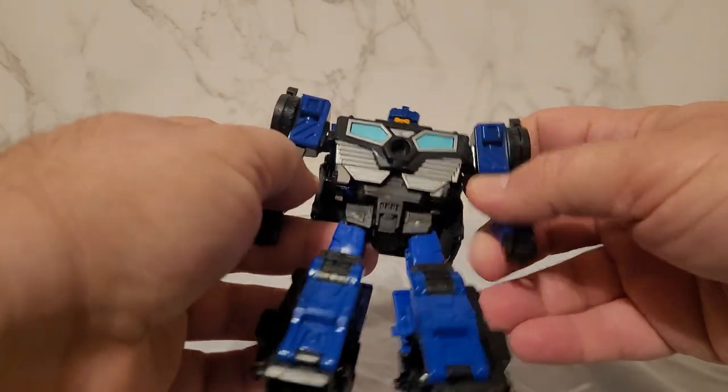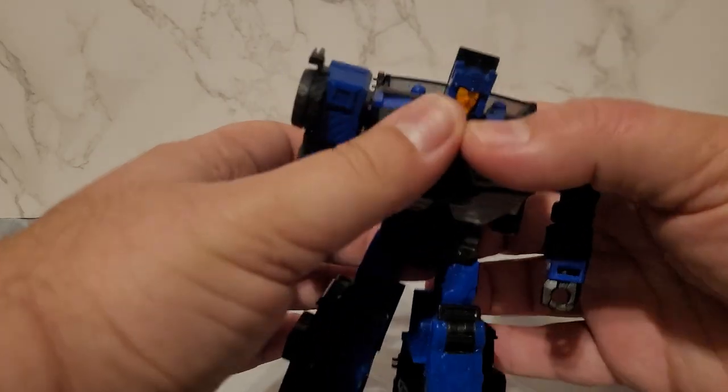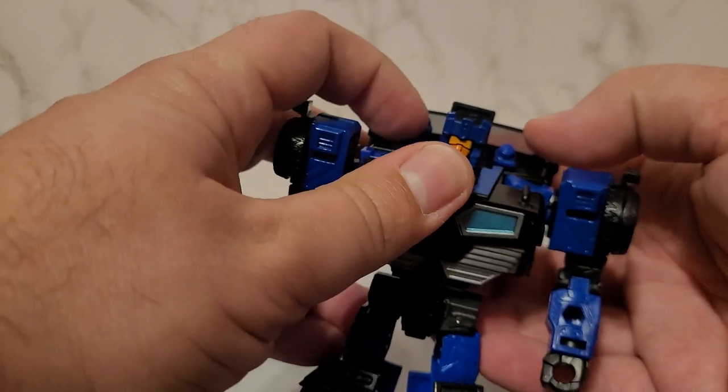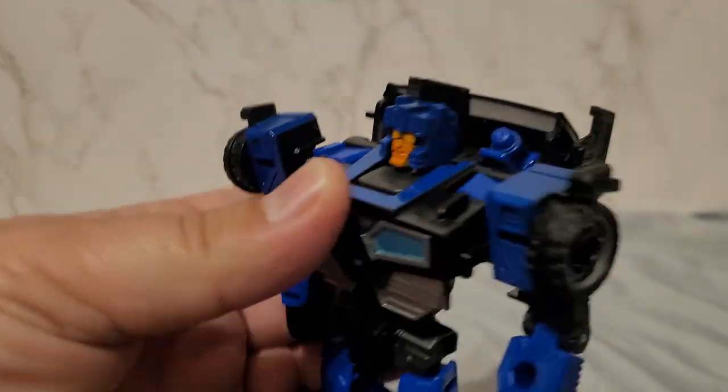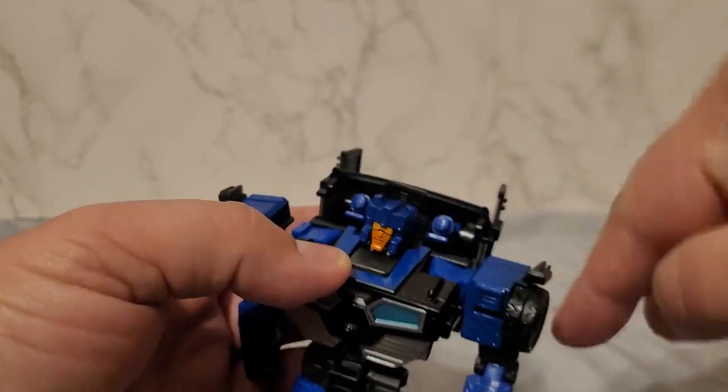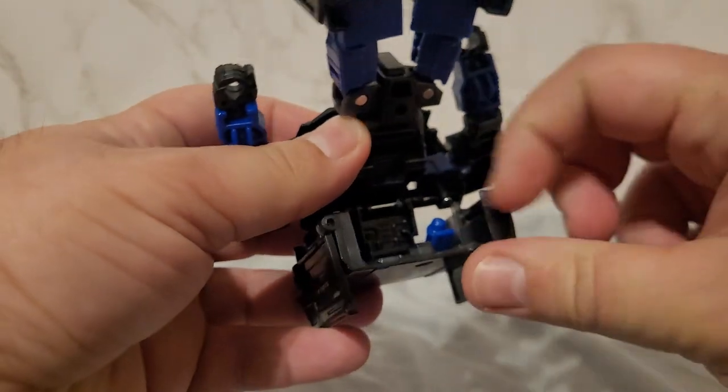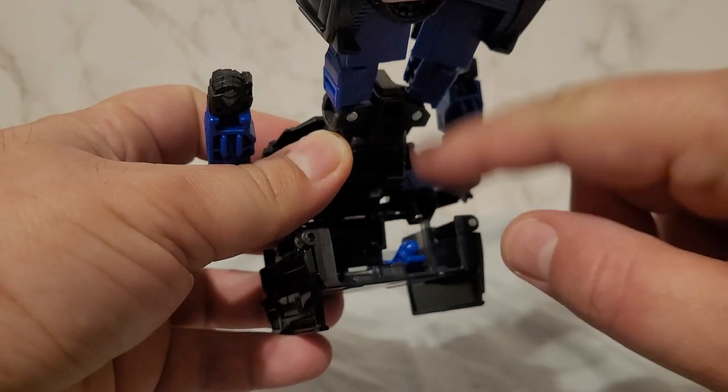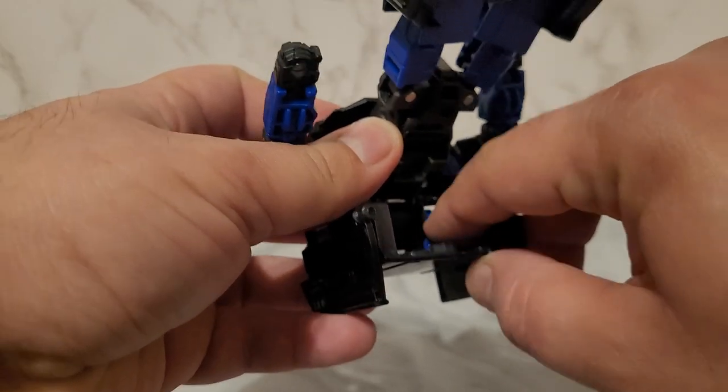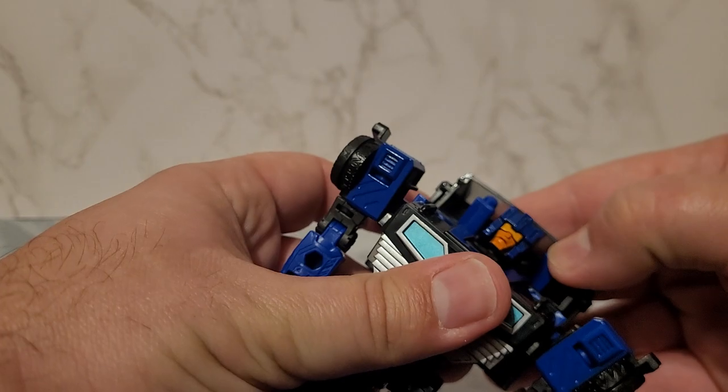Just to explain the Easter egg back here, you see these little blasters, these cannons? You can fold them down into the back like so, but if you do this you won't be able to transform them. They do impede the transformation and they're unique to him.